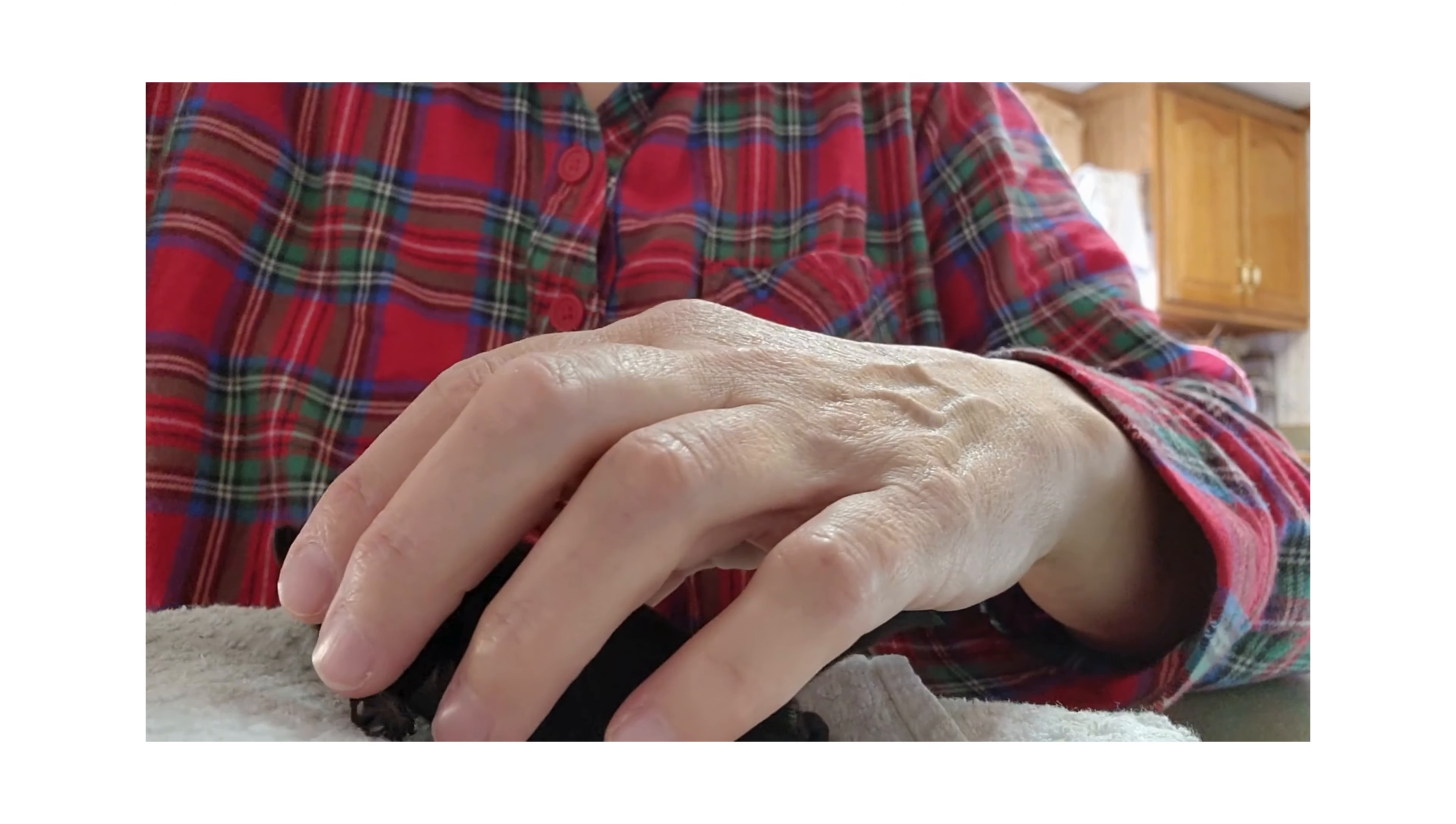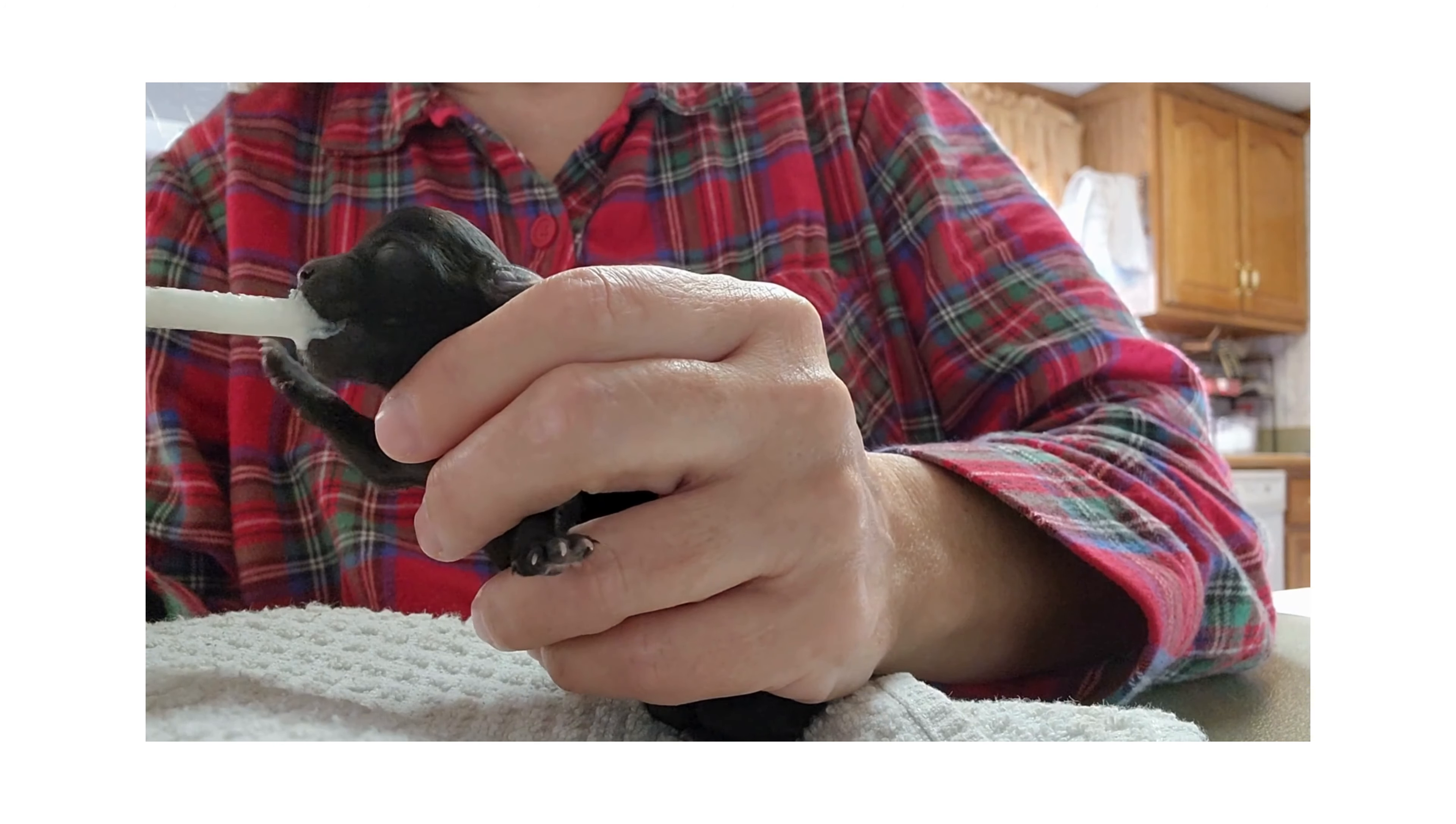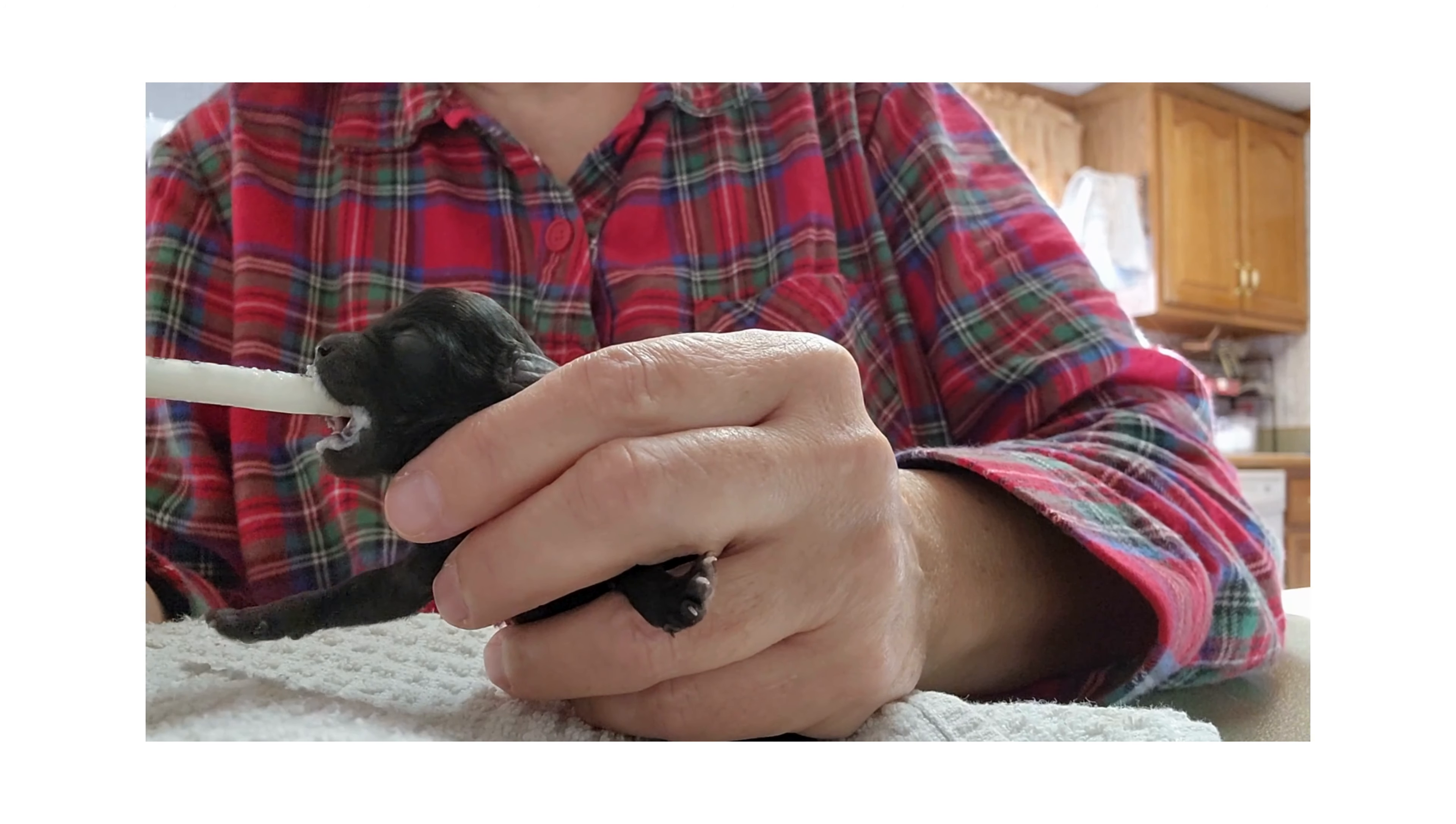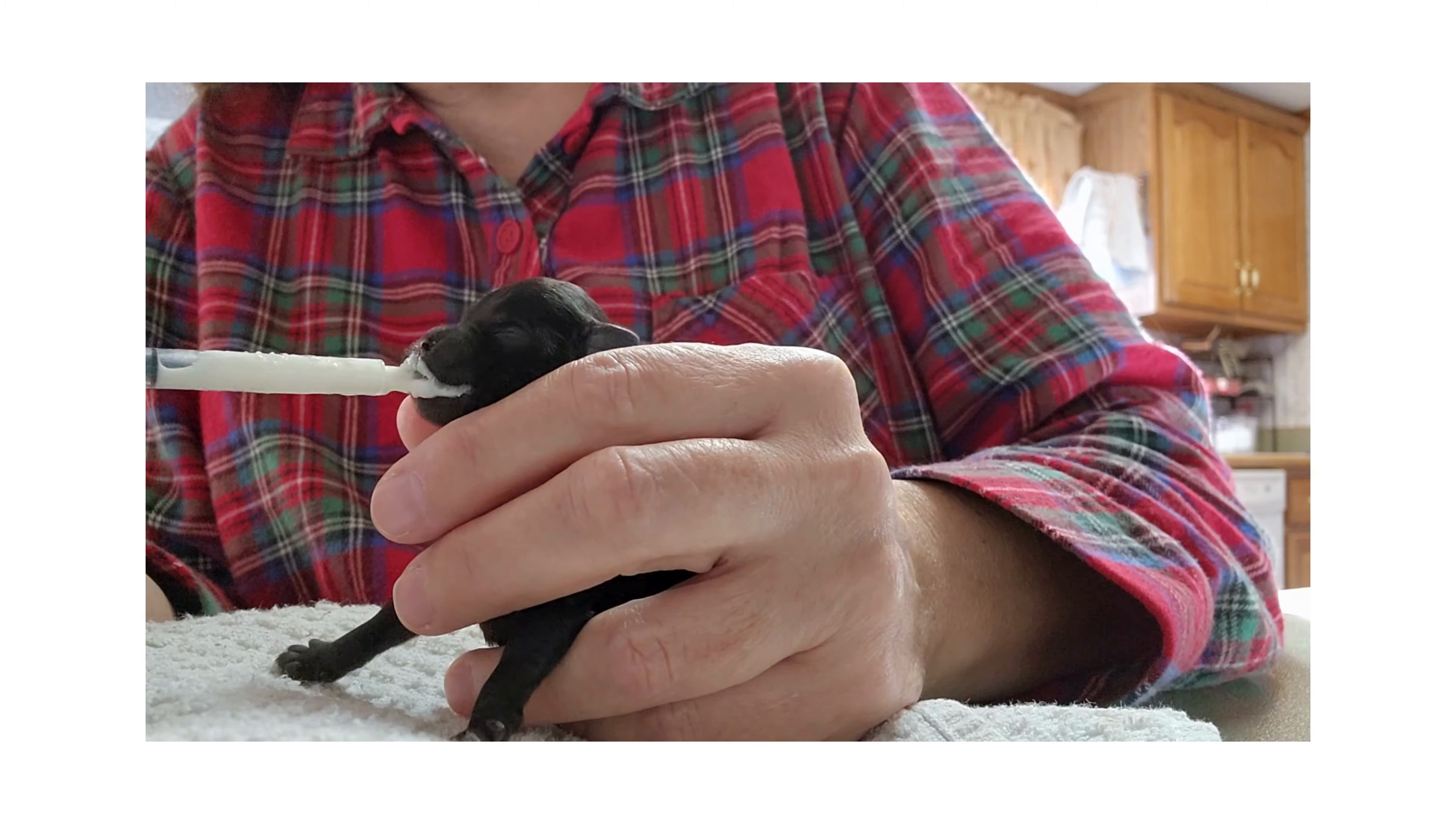This is a three-ounce Bianca puppy. He is hungry. He was just born three days ago and he's quite a bit smaller than the rest of the litter. He just can't quite get up there to get any milk from mom. The big boys just knock him off. And he's doing very well.